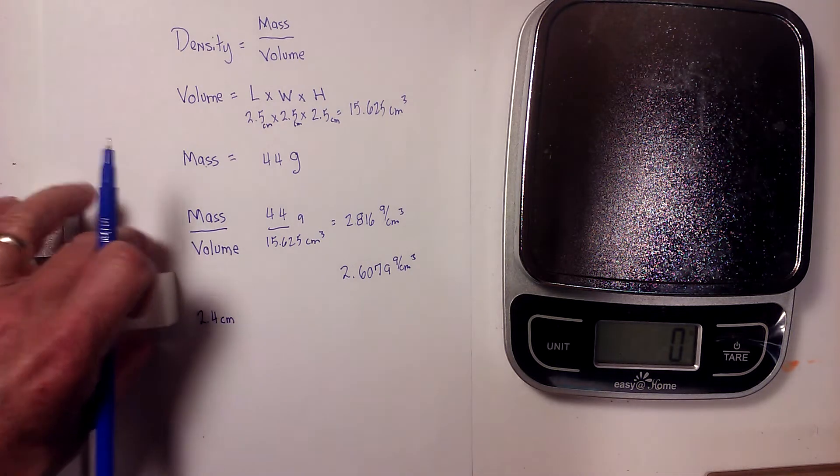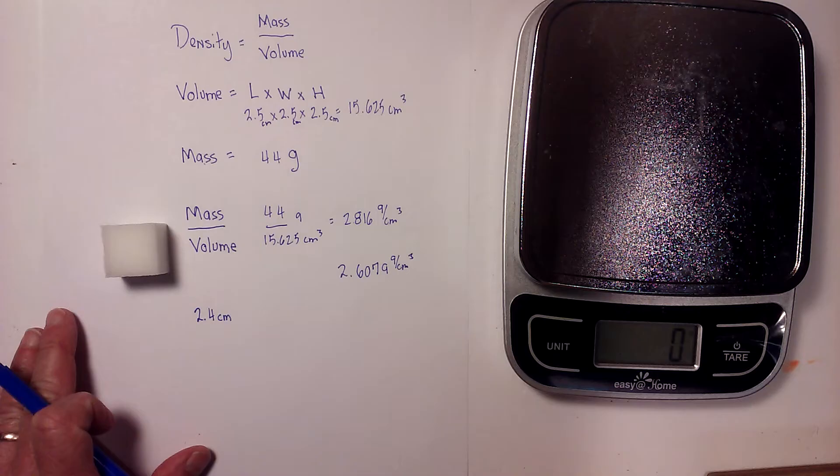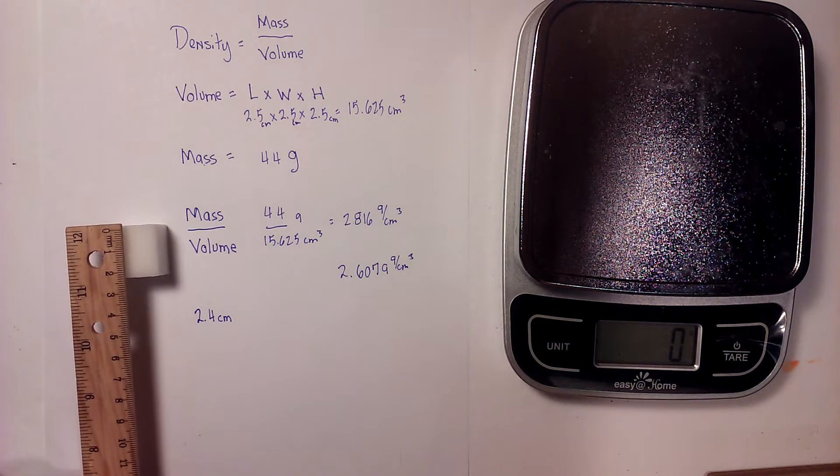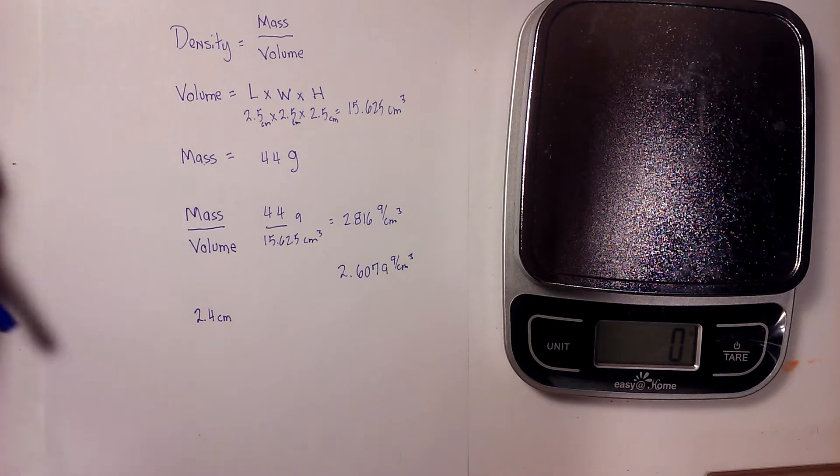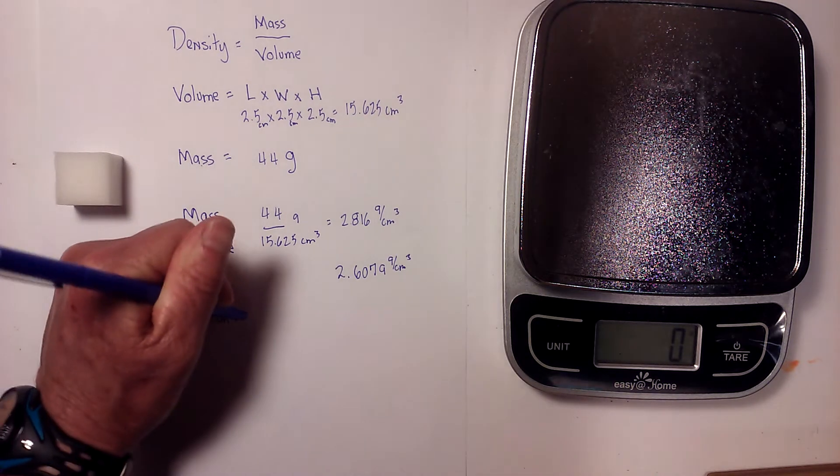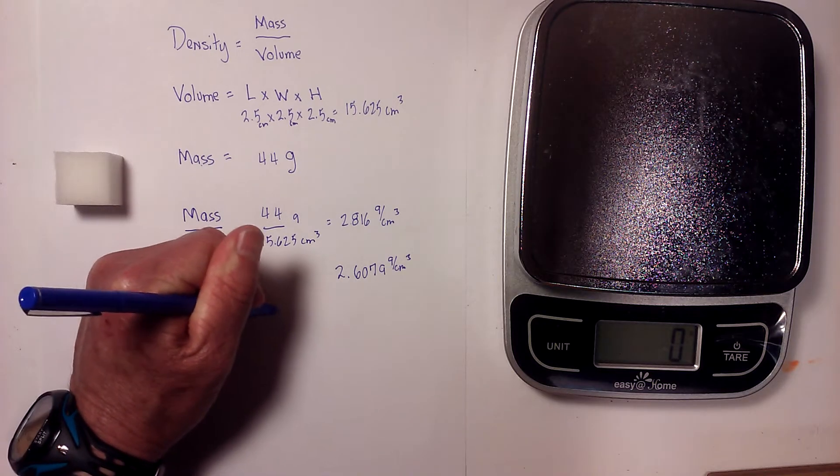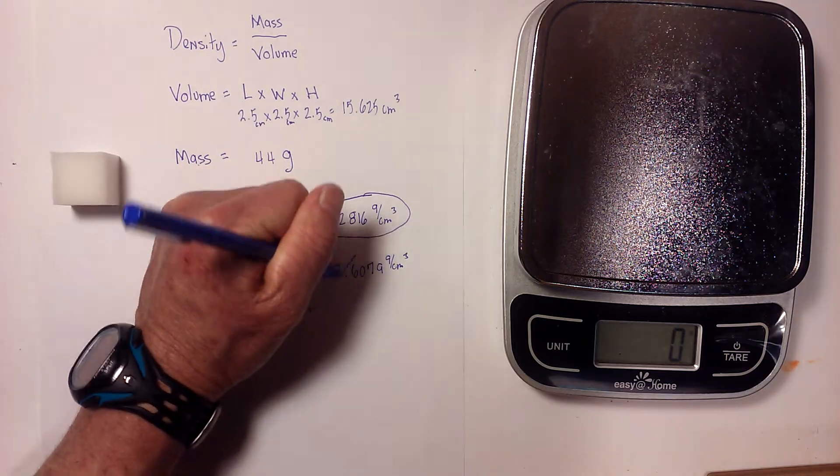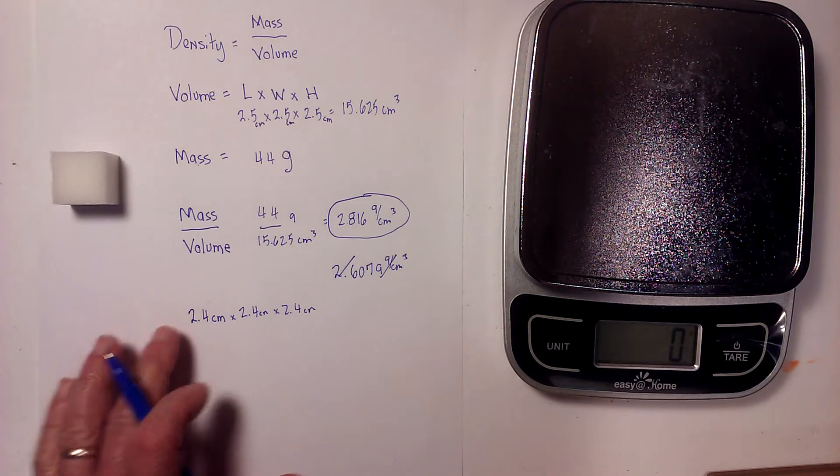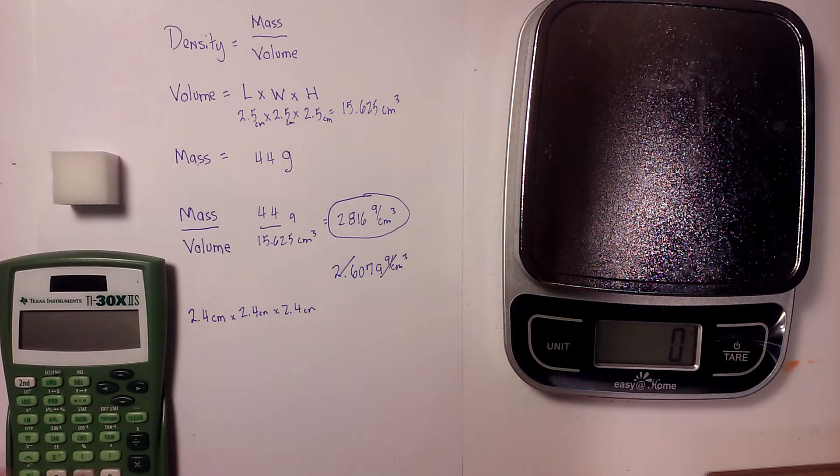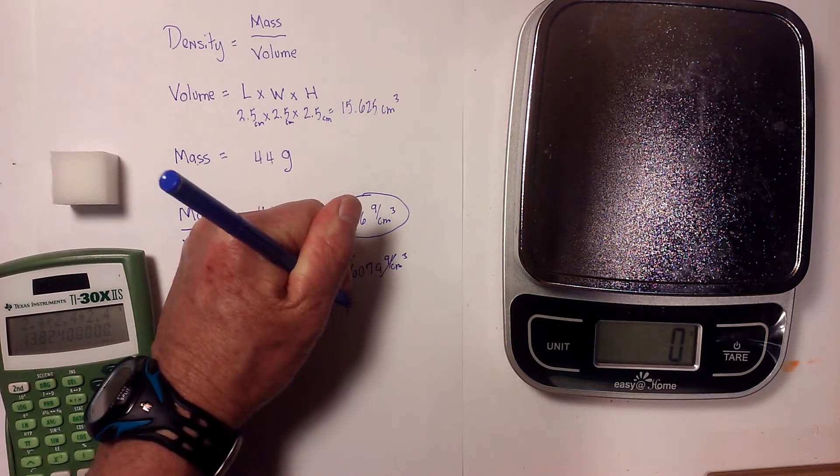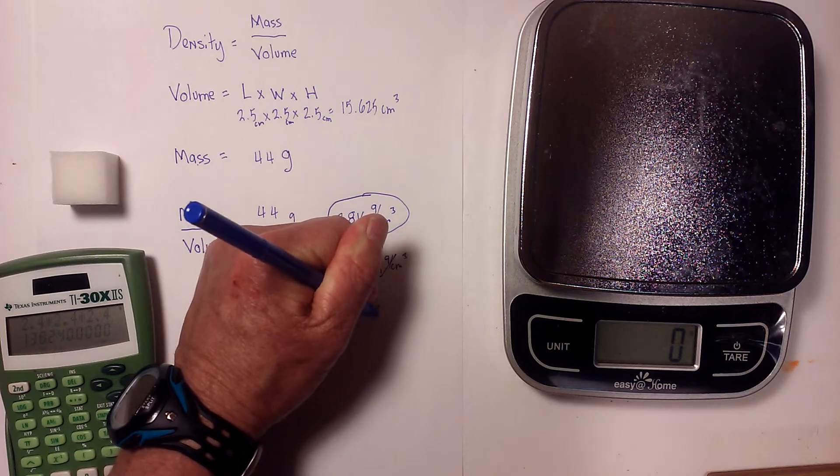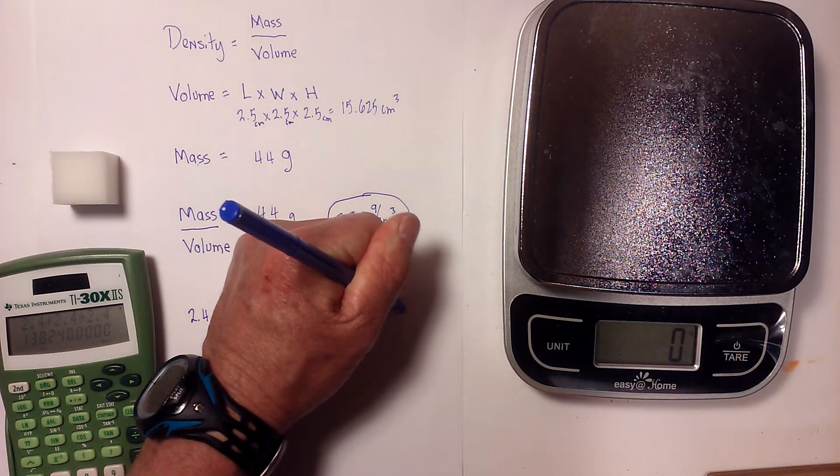Now let's calculate the density of this little foam. I measured it earlier, it's a little bit smaller than the aluminum cube at 2.4 centimeters. So I'm going to take 2.4 times 2.4 times 2.4, and my volume will be 13.824 centimeters cubed.